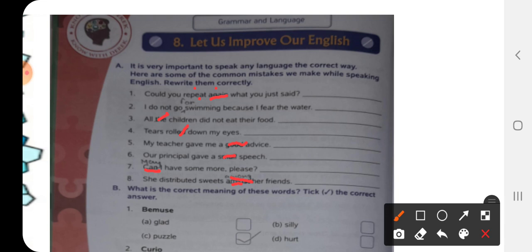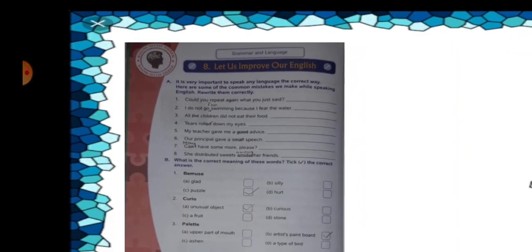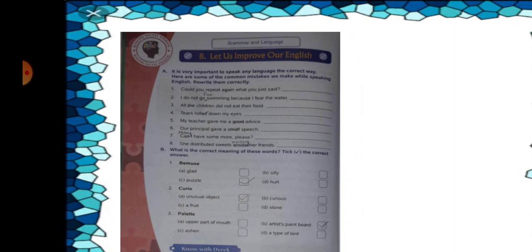This way we complete rectifying the sentences. Now we are going to the next one. Children, number B. What is the correct meaning of this word? It is dealing with the vocabulary. It's dealing with the meanings. Take the correct answer.